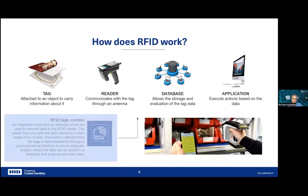For RFID you need four main components. First, a tag — for example, a card like a contactless credit card with an antenna and chip, but it can be any form factor. Second, a reader — either handheld or stationary. The reader detects at least a unique serial number, sometimes more data, and passes this to a database where business logic is stored. Finally, an application that executes the business logic.